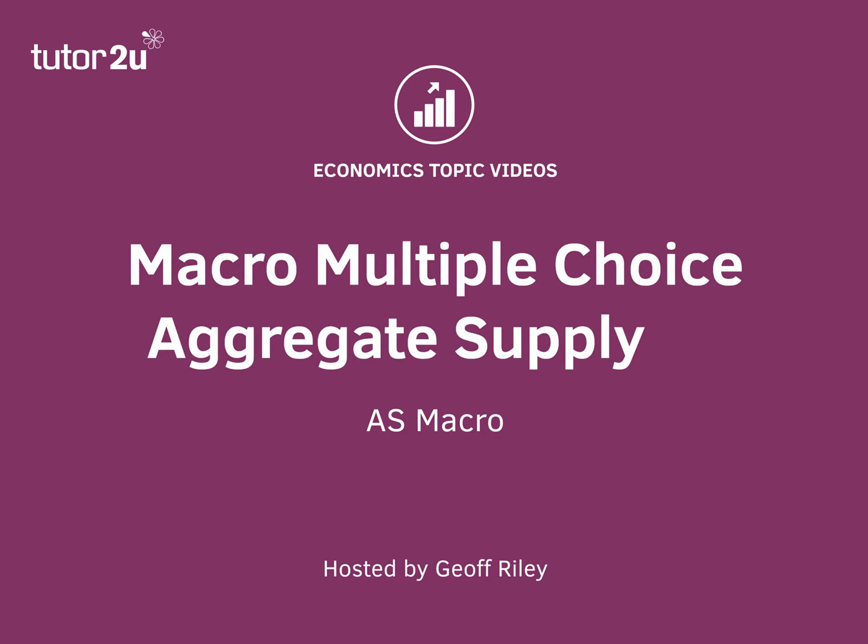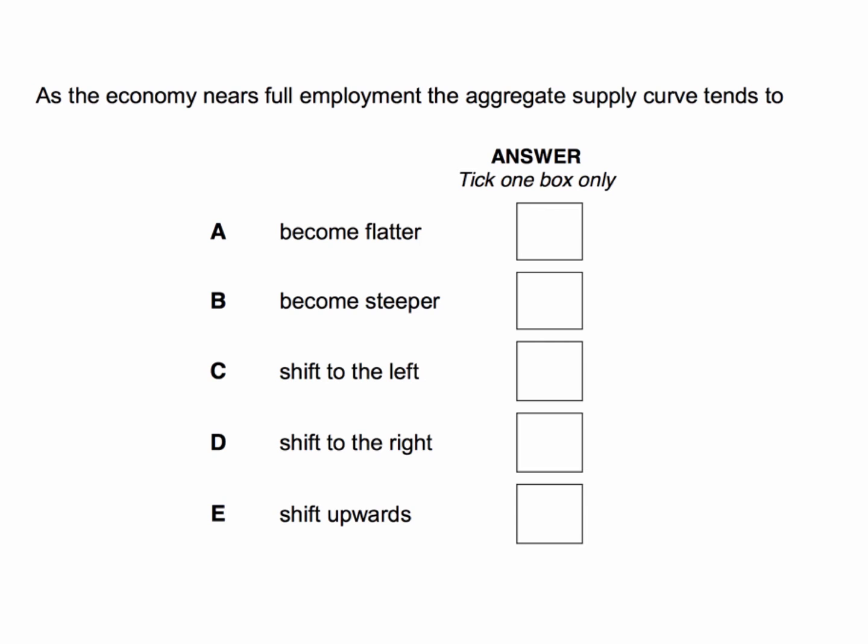Let's look at a macro multiple choice question, which this time is focusing on the Keynesian aggregate supply curve. As the economy nears full employment, what happens to the aggregate supply curve? It tends to do what?